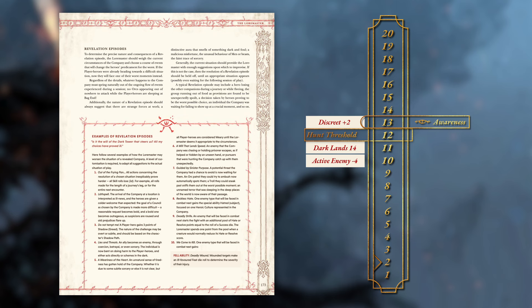Players should, however, get a sense that something has changed, and that some strange dark force is at work in a way that it wasn't before. This could be as simple as the weather unexpectedly changing for the worse, a foul smell in the wind, or a general feeling of unease. You can and should come up with your own Revelation Episode to fit your campaign, but page 173 includes some possible options.